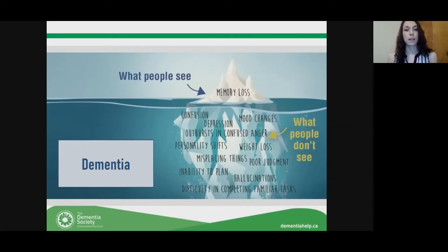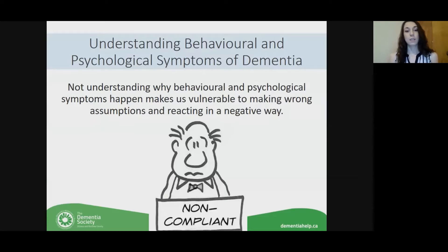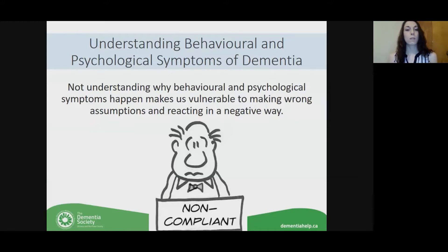Anything that the brain does can be impacted by dementia, and that includes our behaviors and our psychology as well. We talk about psychological symptoms and behaviors because they're really complex to cope with. They have a high impact on the person living with dementia and on their support network — their caregivers, family members, or friends. When we don't understand behavioral and psychological symptoms, it makes us more vulnerable to making the wrong assumptions about why someone is acting the way they're acting.